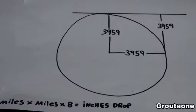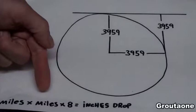8 inches per mile squared is a generally accepted formula for figuring out the amount of curve per mile. The formula would look like this.